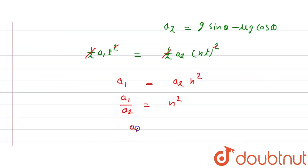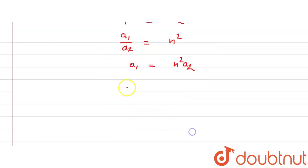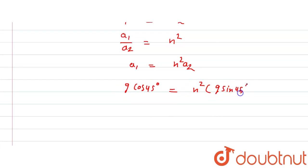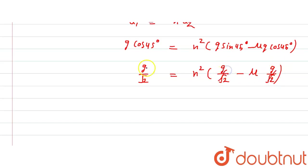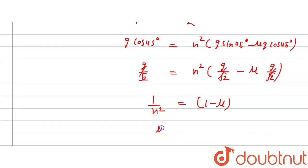Substituting θ = 45°: a1 = g sin45° = g/√2, and a2 = g sin45° − μg cos45° = g/√2 − μg/√2. So a1/a2 = n² gives: (g/√2) / (g/√2 − μg/√2) = n². The √2 and g cancel, giving 1/(1 − μ) = n², so μ = 1 − 1/n².